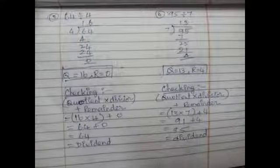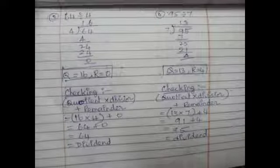Third sum: 64 divided by 4. One 4 is 4, 6 minus 4 is 2. Bring down 4 to get 24 — six 4s are 24, remainder 0. Quotient is 16, remainder is 0. Checking: 16 multiplied by 4 plus 0 is 64, which equals our dividend. Answer is correct.